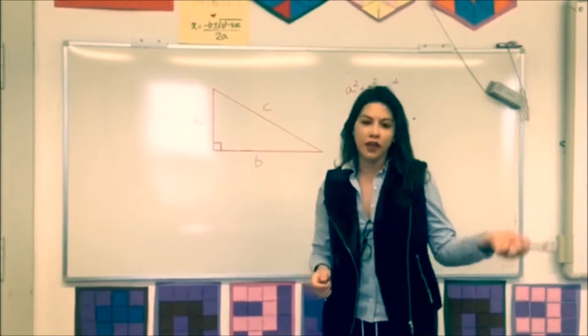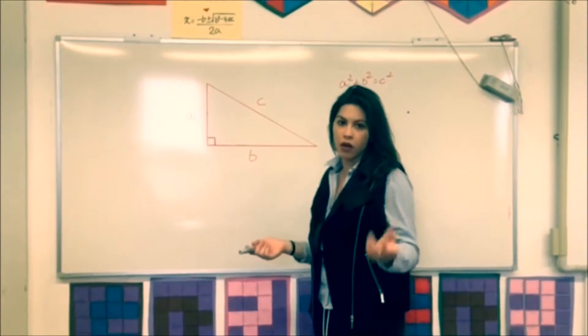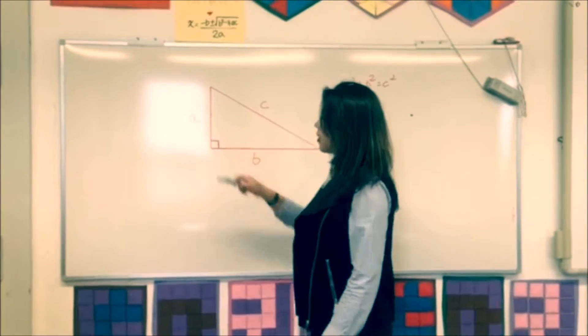When do you know if it's a right-angle triangle? When there is a 90-degree angle, or when there is this little box here.